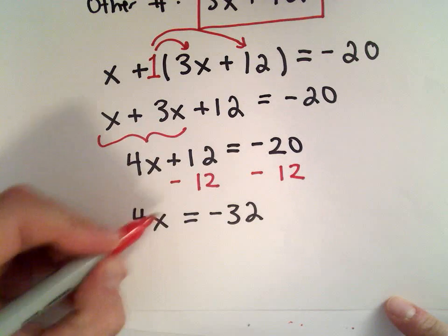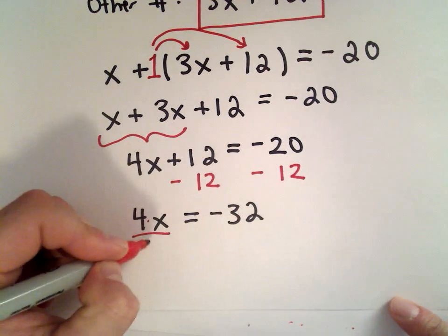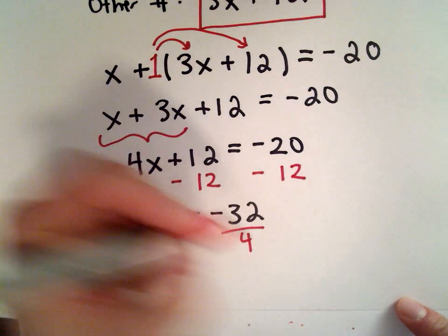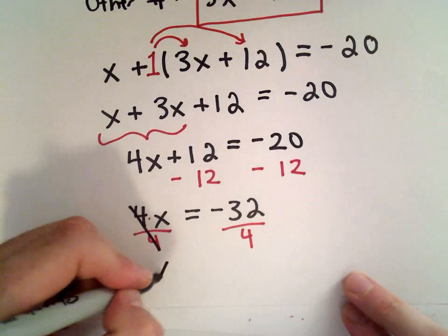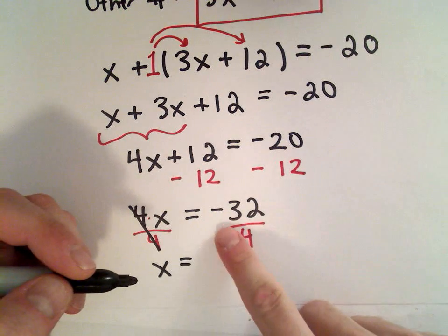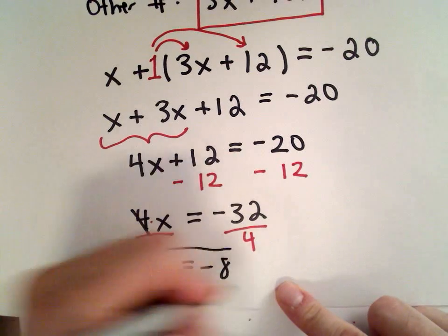I've got 4 multiplied by some number equals negative 32. Since I'm multiplying by 4, I'll divide both sides by 4 to get rid of that 4 on the left side. I'll be left with x equals negative 32 divided by 4. That gives me negative 8.